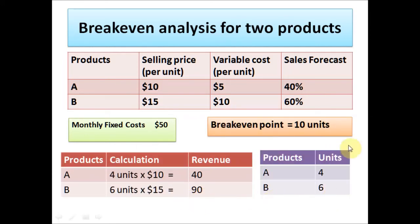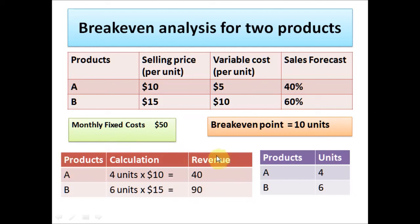Now that we have the breakeven point in units, we need to calculate the breakeven point in revenue. For product A, we take the 4 units times the $10 selling price, giving $40 in revenue. For product B, we take the 6 units times the $15 selling price, so 6 times 15 is $90. So the total breakeven revenue is $40 for product A and $90 for product B.